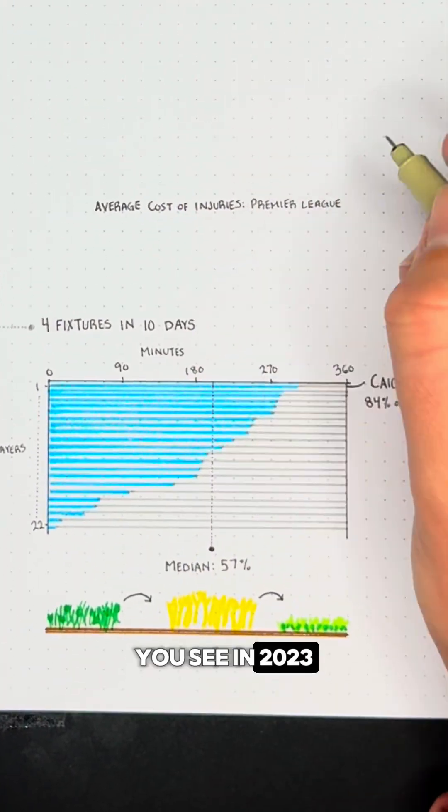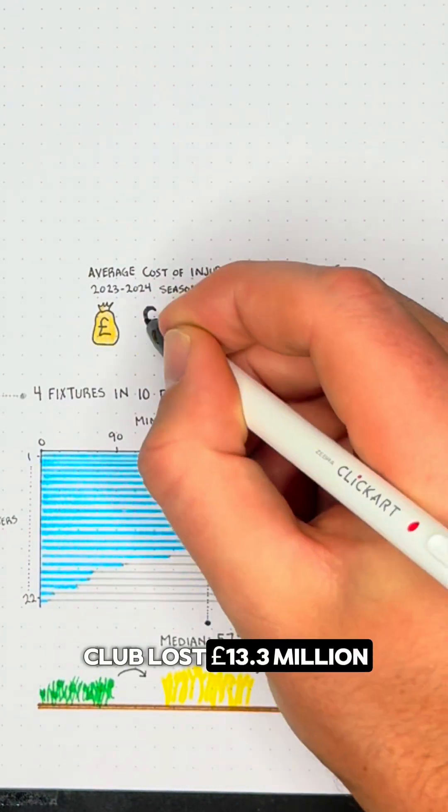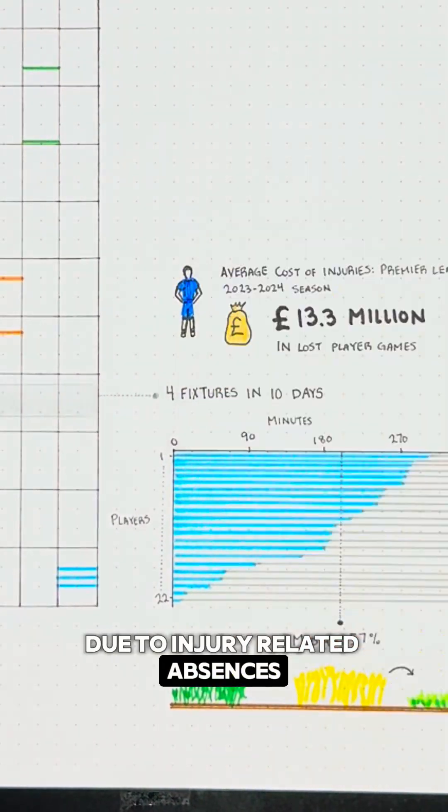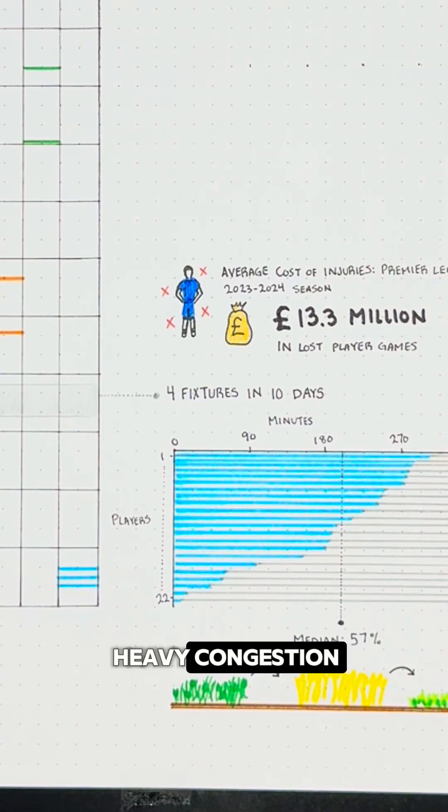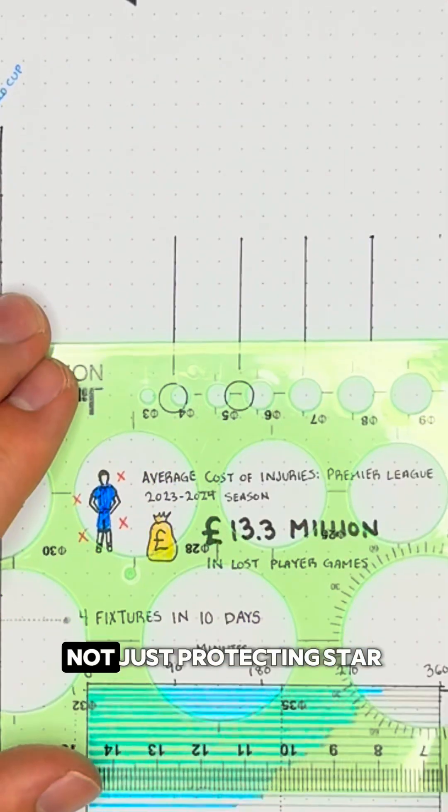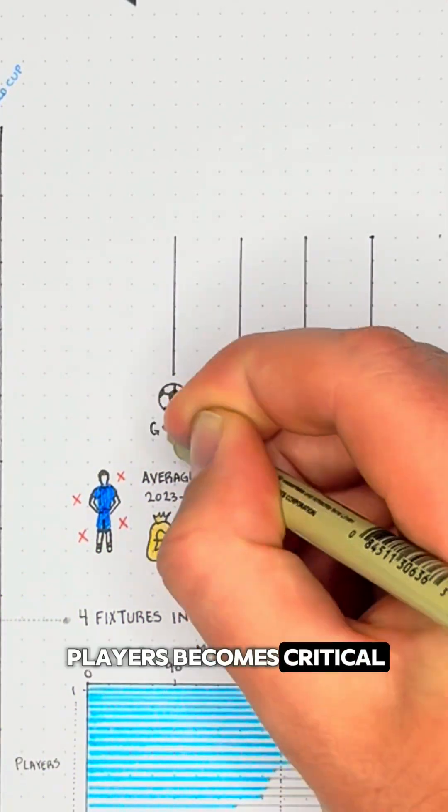You see, in 2023, the average Premier League club lost 13.3 million pounds due to injury-related absences, and in periods of heavy congestion, maintaining overall squad health, not just protecting star players, becomes critical.